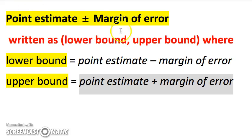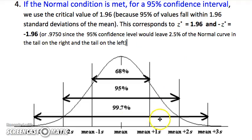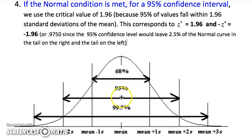All in all, we have a point estimate plus or minus our margin of error. Write it in the form: point estimate ± margin of error, and also as (lower bound, upper bound), where the lower bound is the point estimate minus the margin of error and the upper bound is the point estimate plus the margin of error. If the normal condition is met, the confidence interval is centered at p-hat. At 95% confidence we extend not one but two standard deviations (actually 1.96) above and below the mean. The sum of the two tail areas represents the 5% of the time our confidence interval would not capture the true parameter — due to chance variation, sometimes our sample statistic will be off.